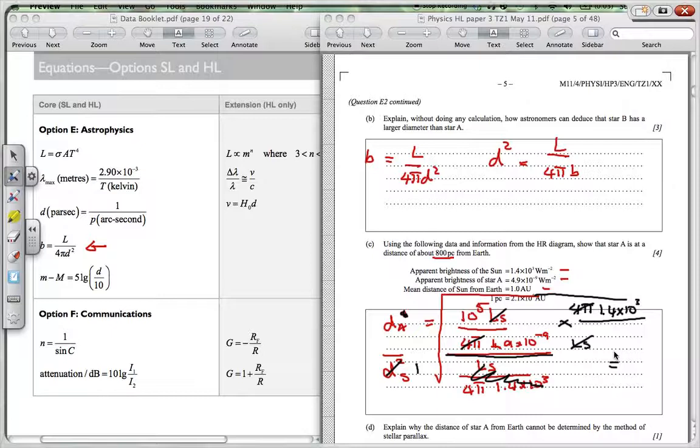And so divide by 4.9 exponent -9. Enter. And I get something 2.857 exponent times 10 to the 16. I'm going to take the square root of that all.